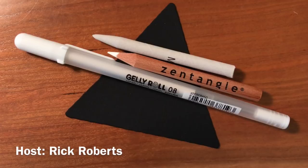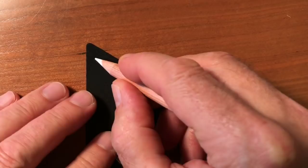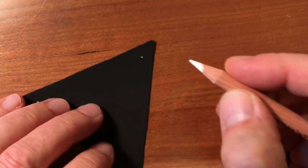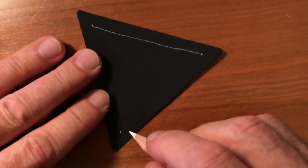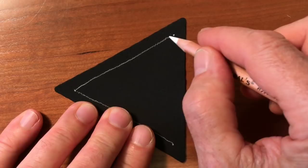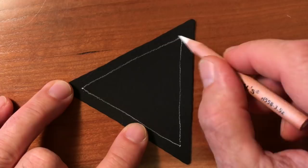So I'm going to begin with putting dots in the corners using the white charcoal pencil and then I will connect those dots with a line to make the border. And I tend to turn my tile for the dots and for the border, just becomes my habit.